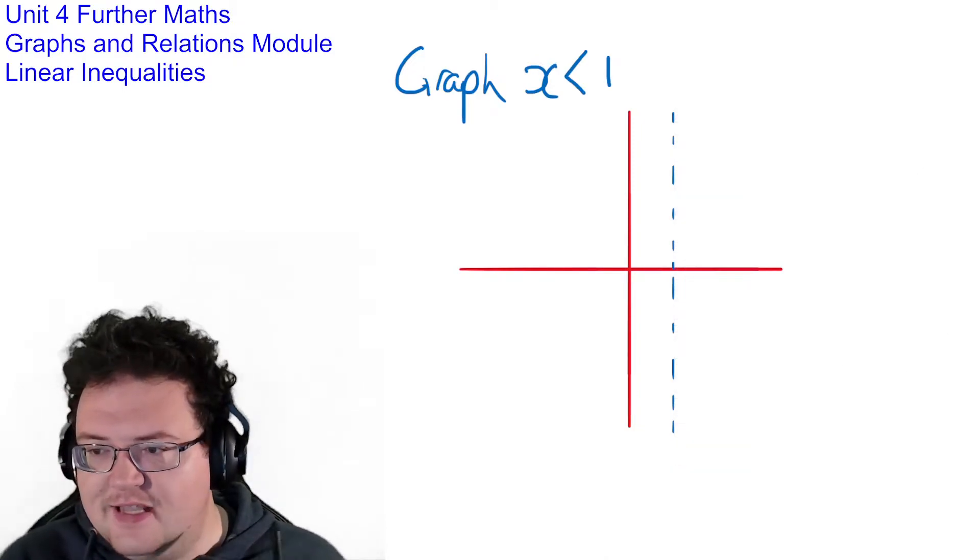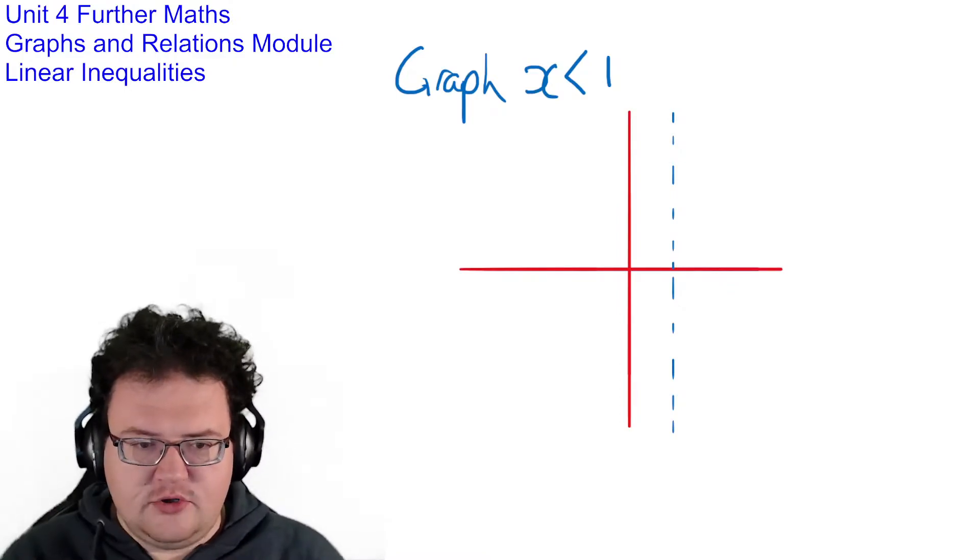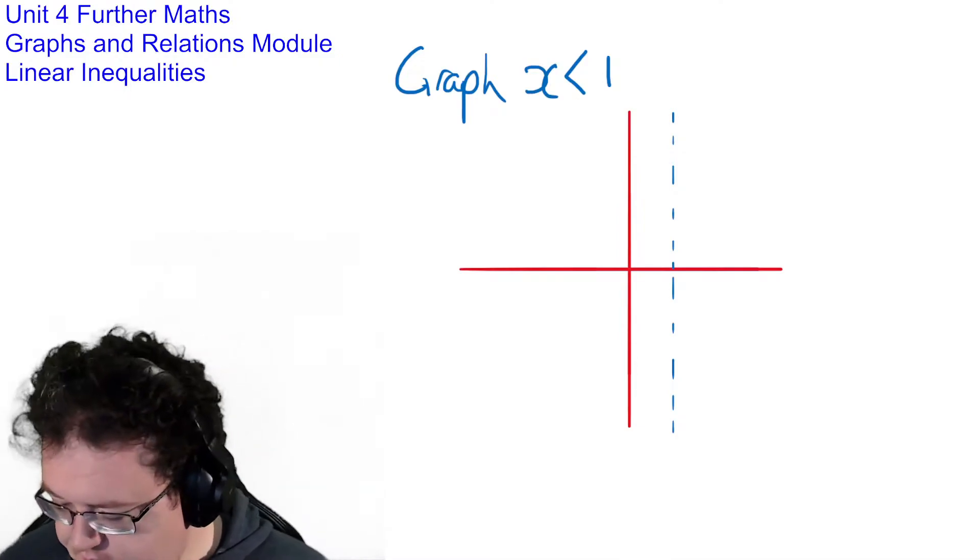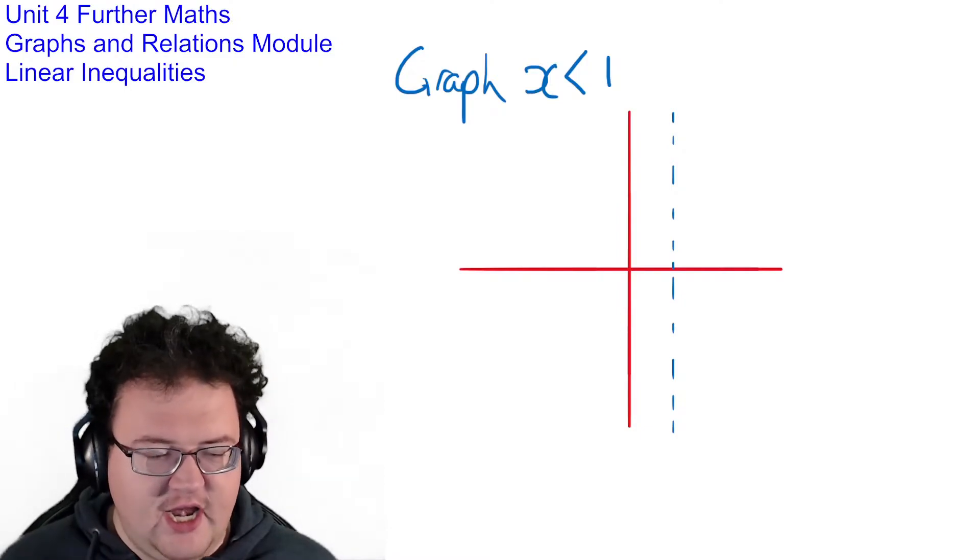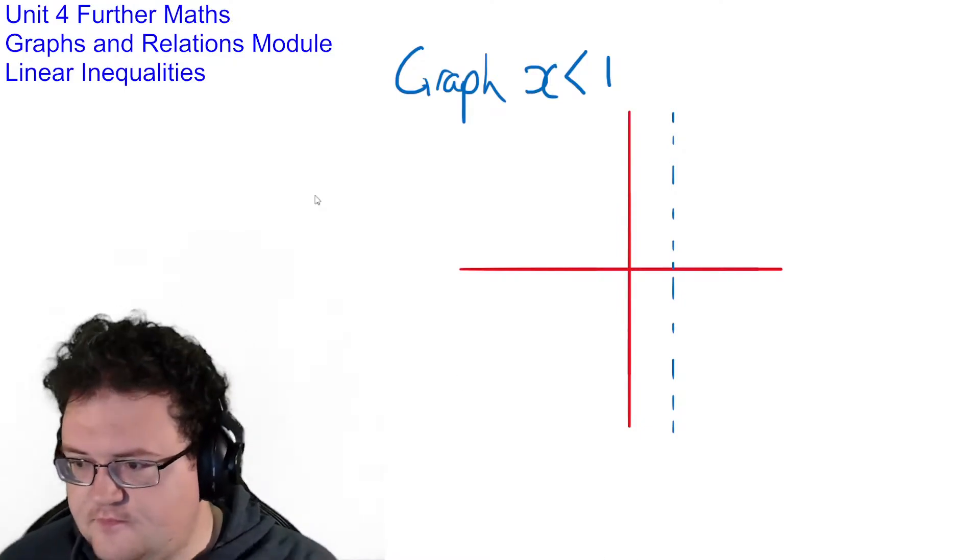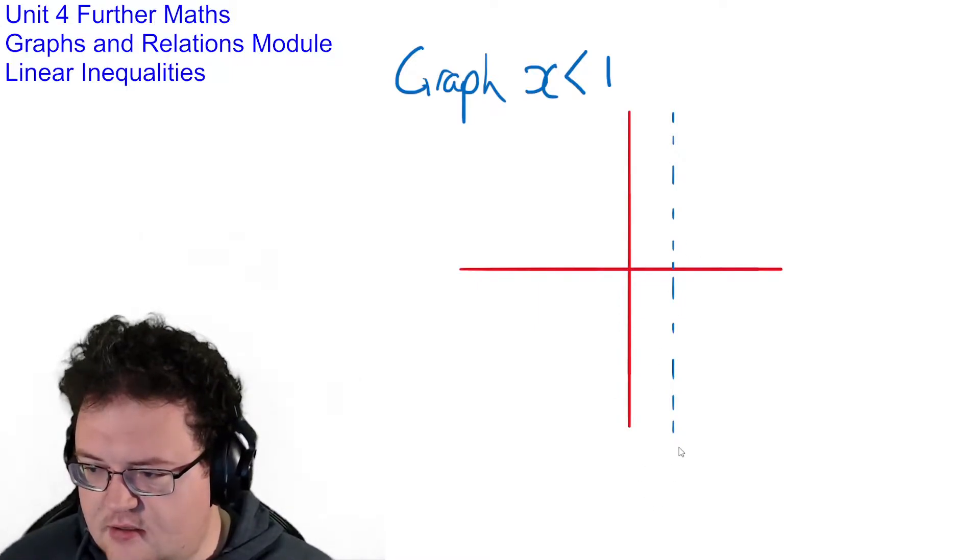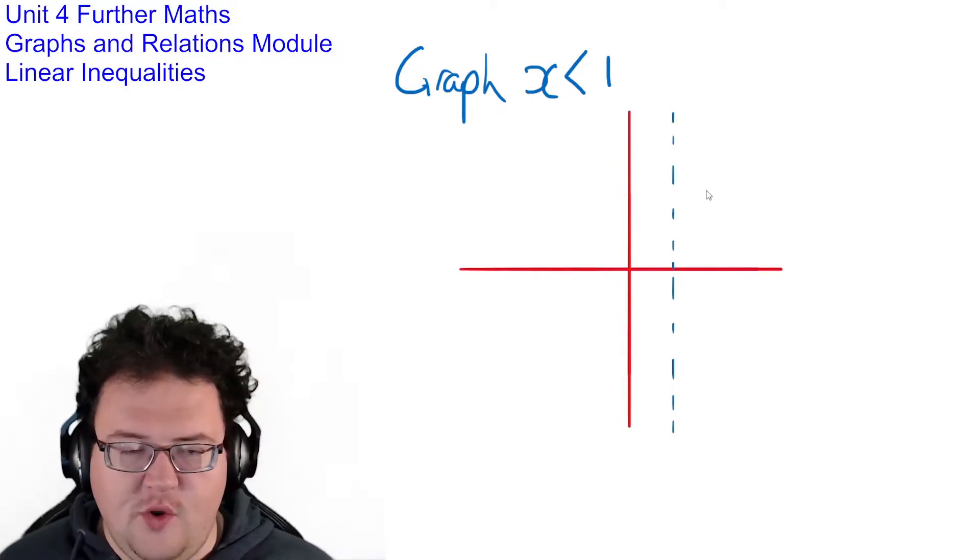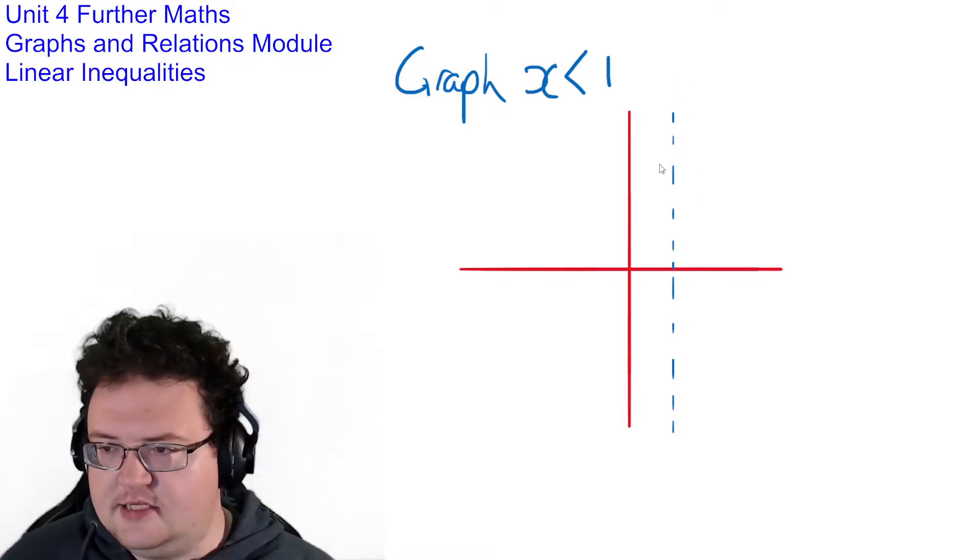Because remember the less than symbol means that you can go infinitely close to 1 but not actually be 1. And the easiest way for us to represent that on a graph is with a dotted line at the value that it states. So this line here, the dotted line is on x equals 1, but it's dotted to communicate that we go infinitely close to it but not actually touch x equals 1.